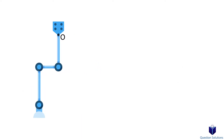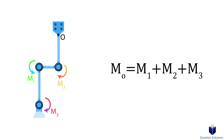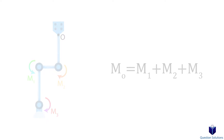If we have multiple forces, we can find the resultant moment by figuring out each individual moment created and then adding them up. When we go through examples, this will become much clearer.